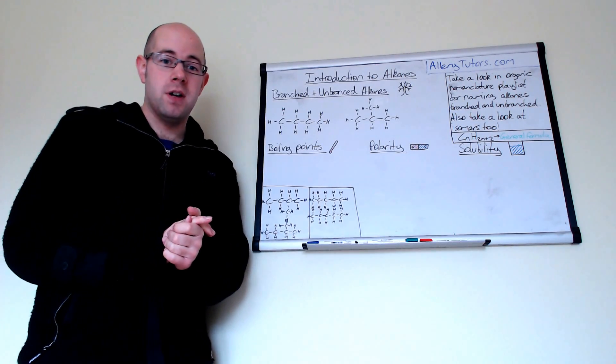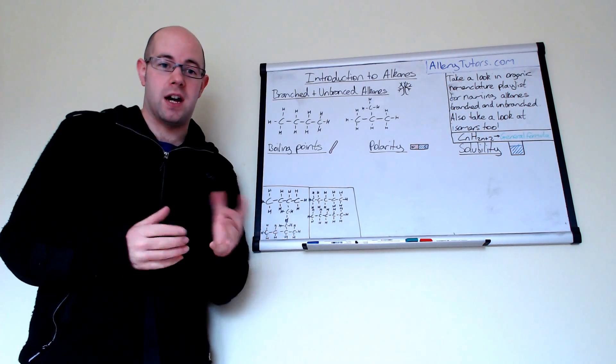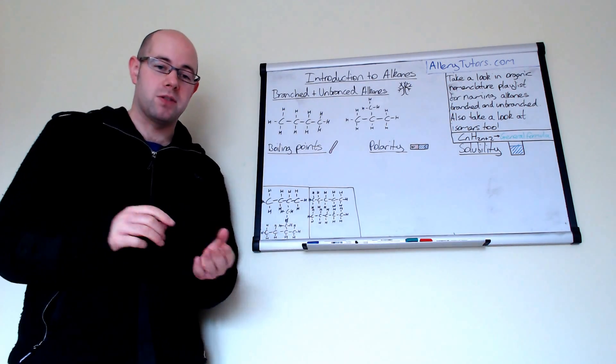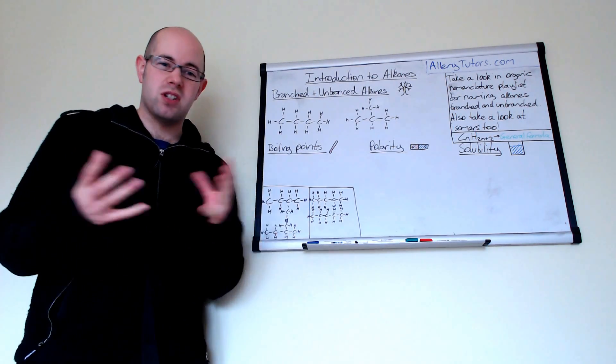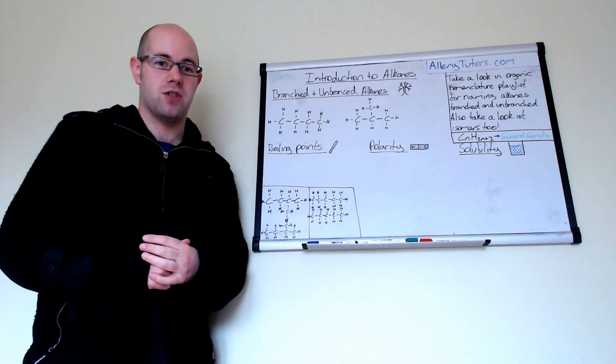So we're going to look at in this video the branched and straight chain alkanes. We're going to look at the boiling points of alkanes, polarity and solubility and these are just a very brief introduction to what they are.